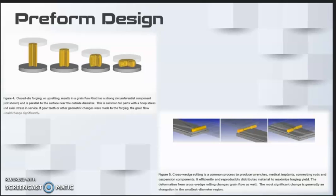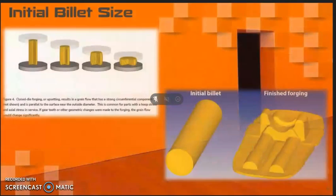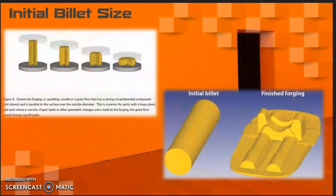Now we will discuss initial billet size. To illustrate the influence of initial billet size, consider an axisymmetric forging of a spur gear blank with the gear teeth machined onto the outer diameter. For these teeth to be as fatigue resistant as possible, we would like to produce a forging with as much radial grain flow as possible.